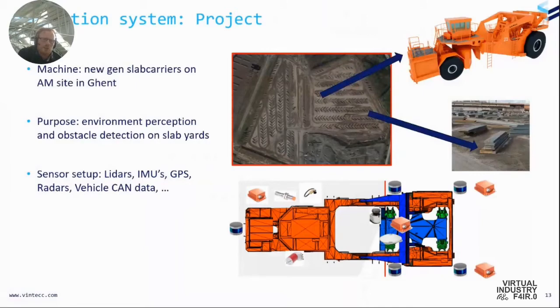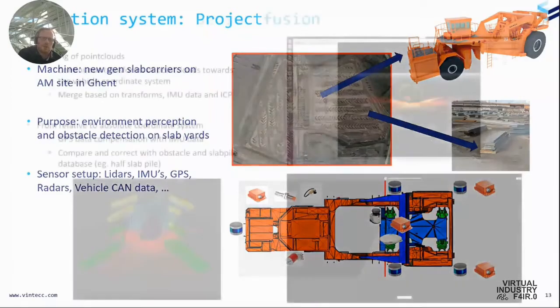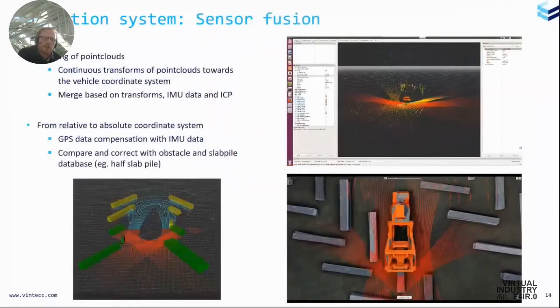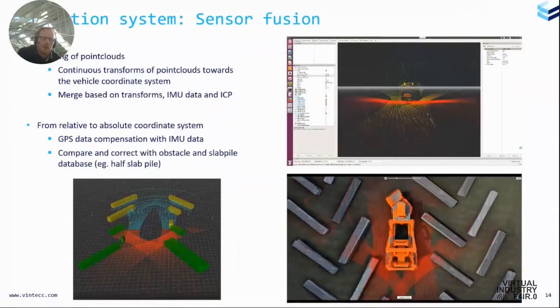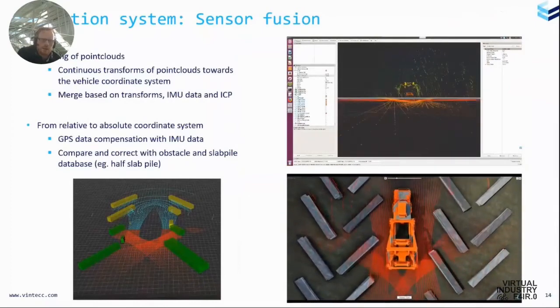What do they want to do there? So they have plans to have a next generation of these slab carriers and they wanted to have some object detection, collision avoidance and these things. So these new machines, they didn't want them to be damaged from collisions with other machines or with the slab piles. Therefore, we have made a sensor study. You see it in the scheme below. We have a lot of LiDARs on this machine, IMUs, GPS, encoders, all kinds of things. Vehicle data is also important, of course.